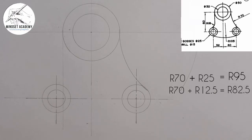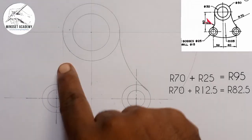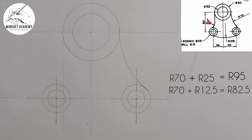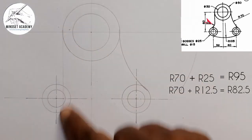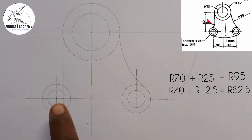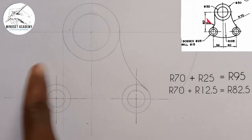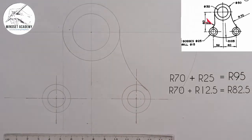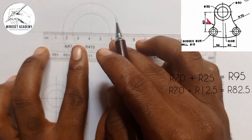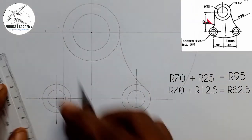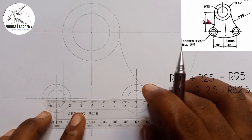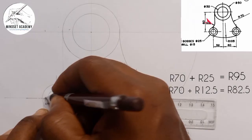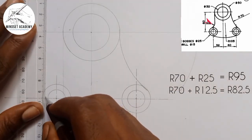The next arc here has a radius of 16, connecting these two points. What I am going to do is measure 16 away from that vertical line to draw a parallel line at a distance of 16. I can measure 16 from this point and another 16 at another point and connect those two points to get the parallel line.